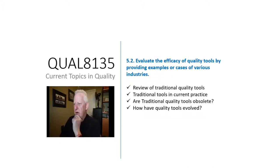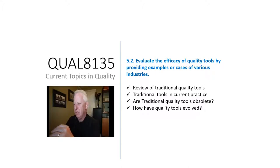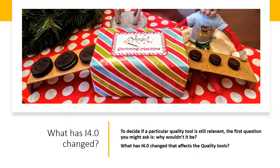Part of the course outcomes we're after today is a review of traditional quality tools, looking at them in current practice, and then asking the question: are these traditional quality tools obsolete, or have they evolved? One way of answering this question is to look at the new technology that's part of Industry 4.0 from a quality lens, and decide what has changed about the technology that necessitates a change in the quality tools used.